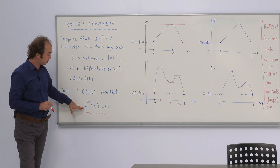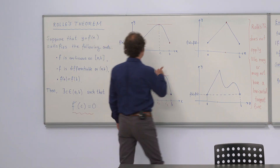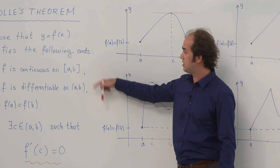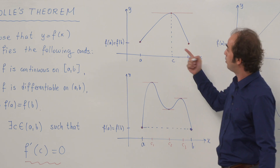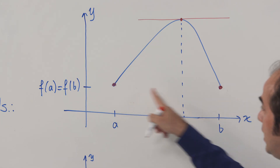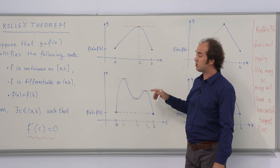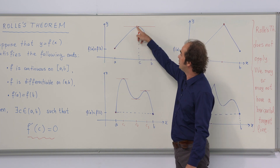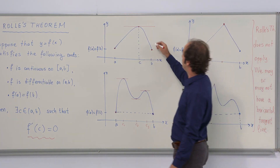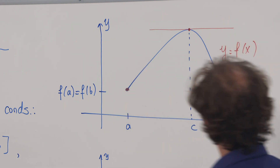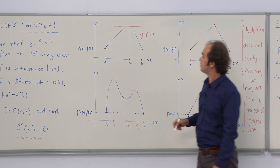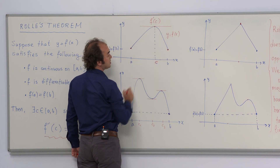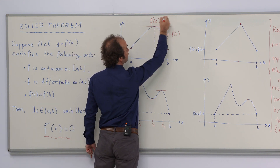The geometrical interpretation of this result is illustrated here. I'm drawing a function f which satisfies these three conditions. The function has equal images at the endpoints a and b, and over that interval I'm drawing a nice function — by nice, I mean continuous and differentiable. Since these three conditions are satisfied, it is easy to see that there is a point c in the open interval a, b at which the function has a zero first derivative.